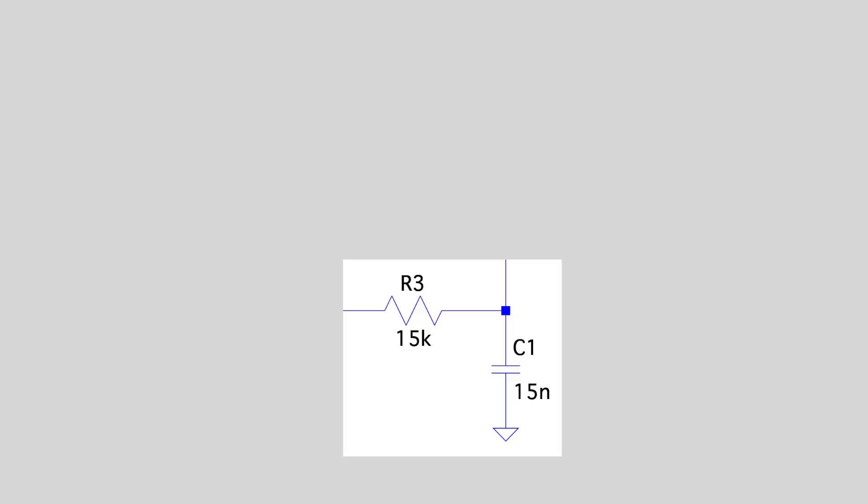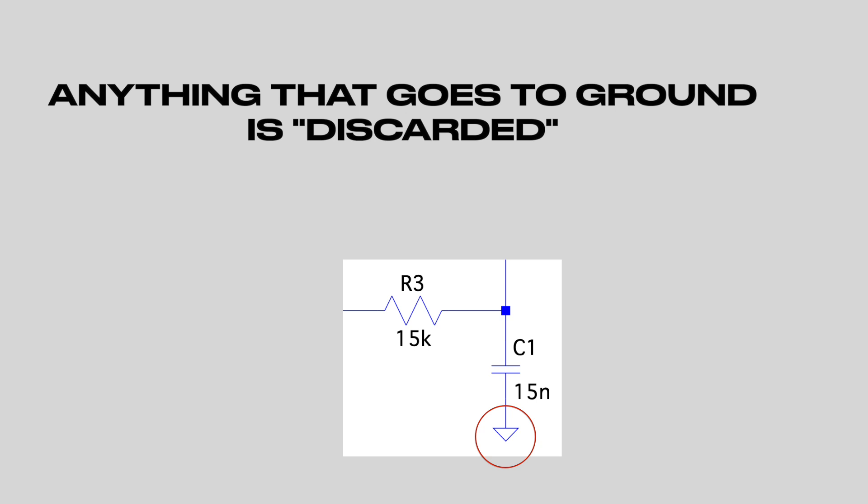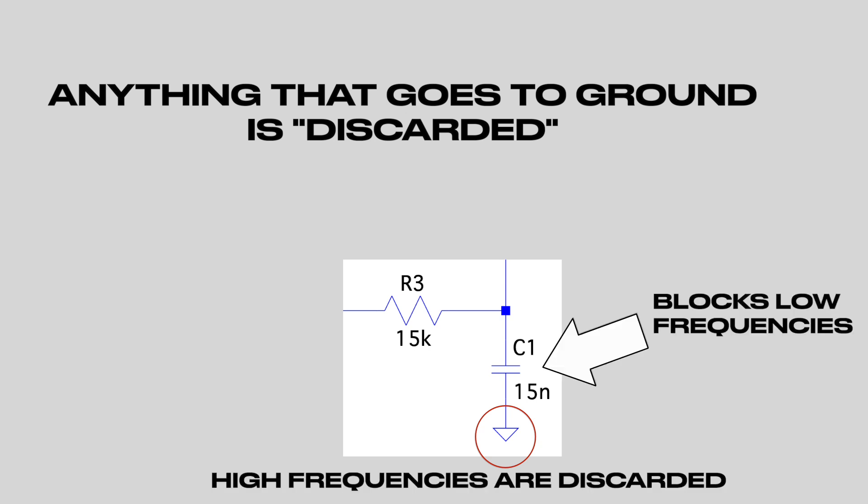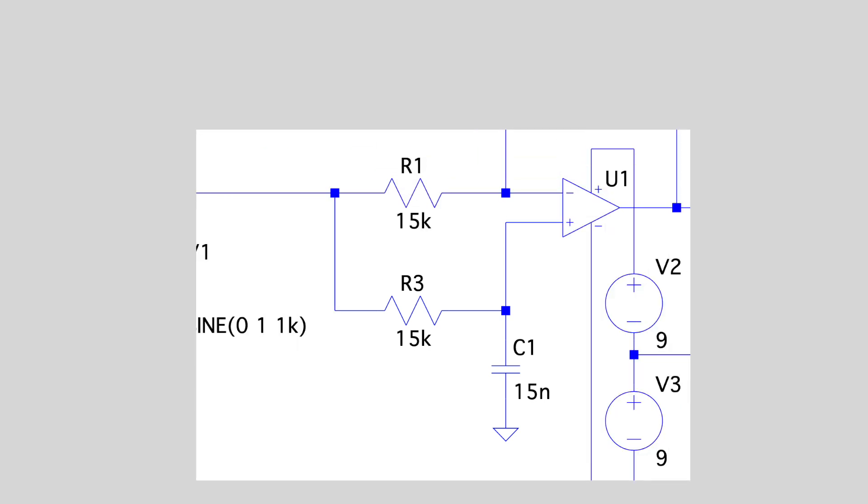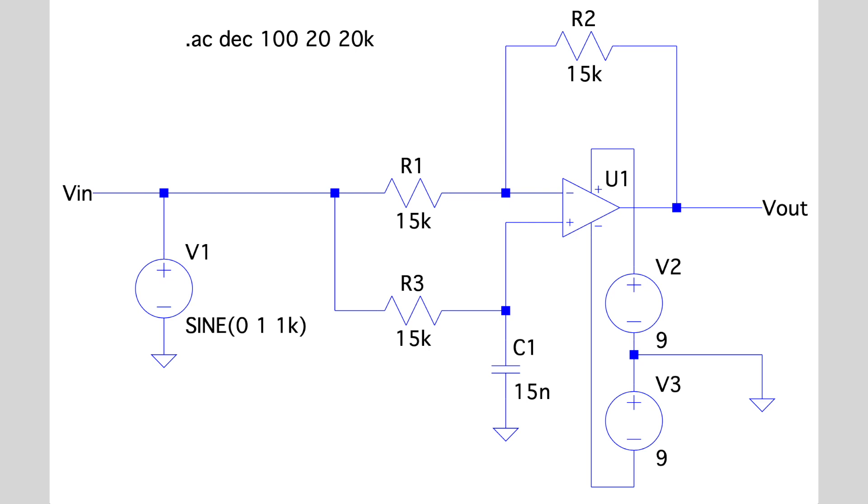But where is it flowing to? So it goes across the resistor and then goes to a triangle, which means the ground. Anything that goes to ground is sort of like chucking it in the bin. It goes to zero volts. And remember, capacitors block DC current, but let higher frequencies go through. So what's happening here? Well, the higher frequencies are going through that capacitor and going to ground and getting chucked away. So we're chucking away our higher frequencies. So this is a low-pass filter because we're keeping the lows and chucking away the highs.